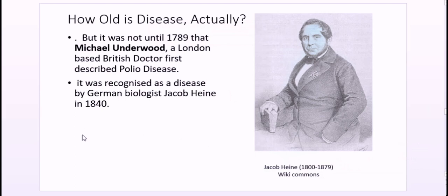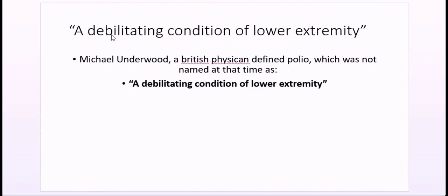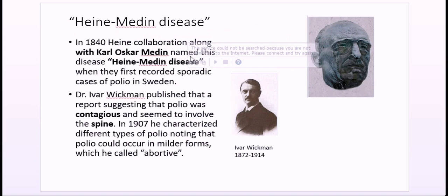Michael Underwood, a British physician, defined polio as a debilitating condition of the lower extremity, affecting the limbs. Jacob Heine, along with Carl Oscar Medin, jointly named the disease Heine-Medin disease. They named it when the first sporadic cases of polio appeared in Sweden.